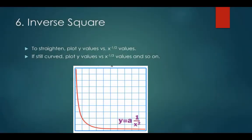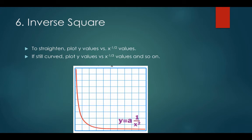Lastly, we have inverse square. This graph also resembles a ski hill, but shows more of a steep beginning and a flatter end. Its standard form equation is y equals a times one over x squared. To straighten this line, you would plot y values versus x to the negative one half, or square root x. If it's still curved, it may be an inverse cubed graph and you would have to plot y values versus the cubed root of x, and so on.